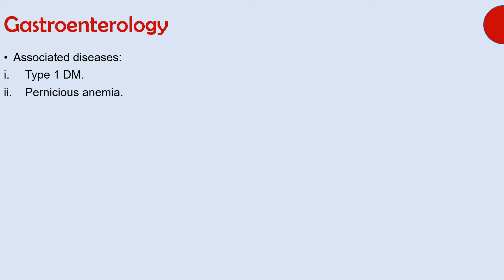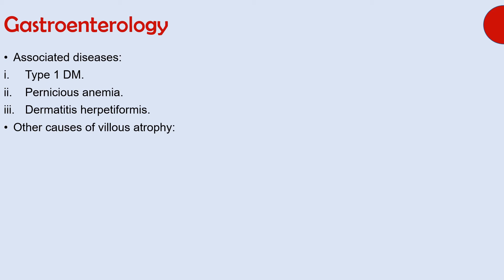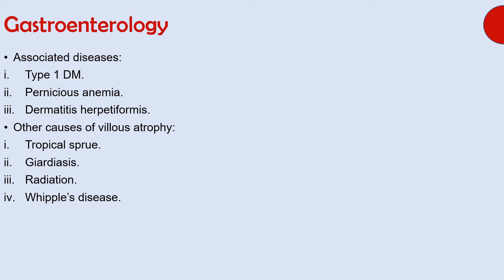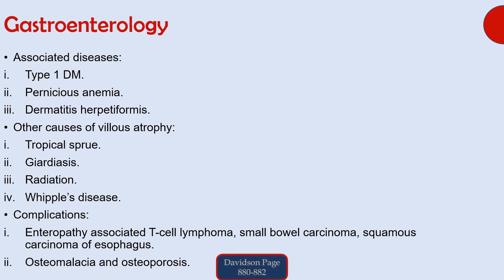Diseases associated with celiac disease include type 1 diabetes mellitus, pernicious anemia, and dermatitis herpetiformis, characterized by an intensely itchy rash on elbows and knees. Other causes of villous atrophy include tropical sprue, GI infections, radiation, and Whipple's disease. Long-term complications include cancers such as enteropathy-associated T-cell lymphoma, small bowel carcinoma, squamous carcinoma of esophagus, and also osteomalacia and osteoporosis due to calcium and vitamin D deficiency.